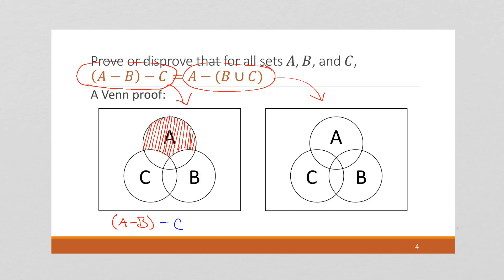And on this side of the equation, I'm going to illustrate it here. We're going to have all of A minus B union C.